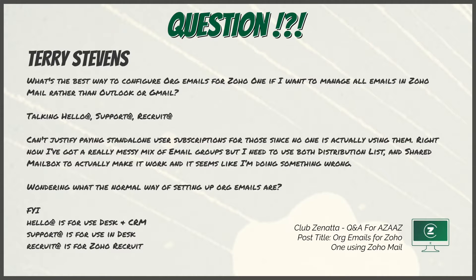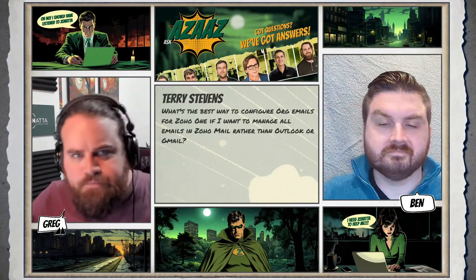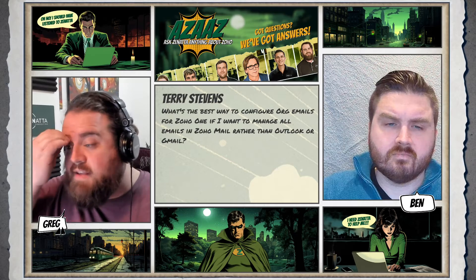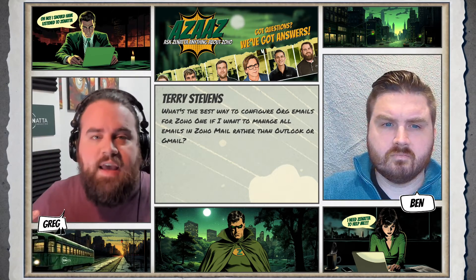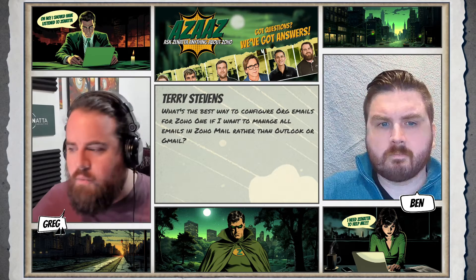For example, hello at domain or support at domain, recruit, etc. I can't justify paying standalone user subscriptions for just those emails since no one's actually using them. Right now I've got a really messy mix of email groups — wondering what the normal way of setting up org emails is. FYI, hello would be for Desk and CRM, support would be for Desk, and recruit would be for Zoho Recruit. So the best-practice, standard way of setting up these kinds of organization emails is usually done through email aliases.